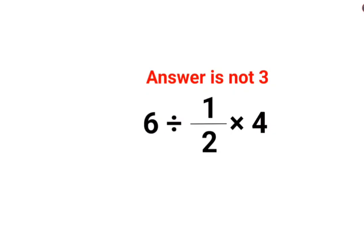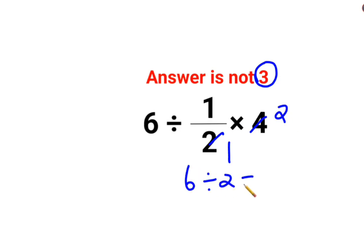Welcome everyone. Today we are going to understand why the answer for this question is not supposed to be 3. At this point we have 6 divided by 1/2, multiplied by 4. See, this is cancelling — this is 2. So 6 divided by 2, the answer is supposed to be 3. A lot of people did this and they got it wrong.